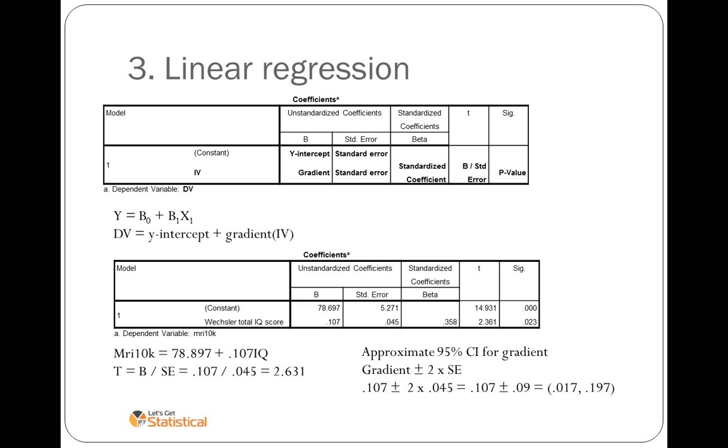We can also calculate a 95% confidence interval for the gradient. What do we estimate the gradient to be? In this case, we're 95% confident the gradient ranges between 0.017 and 0.197.